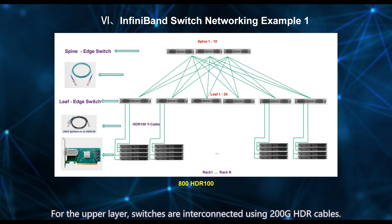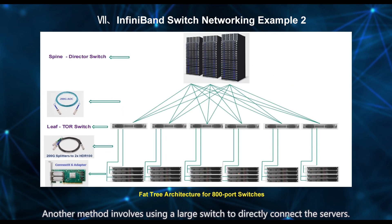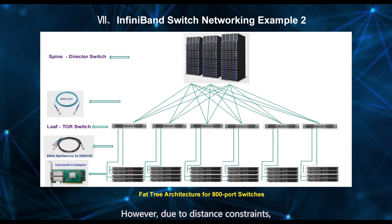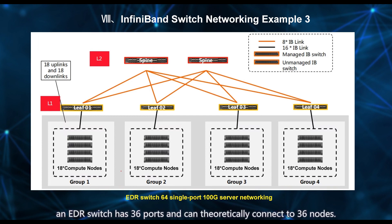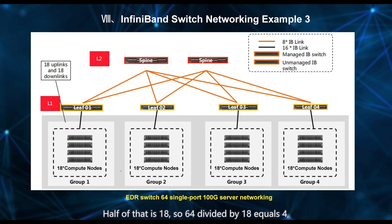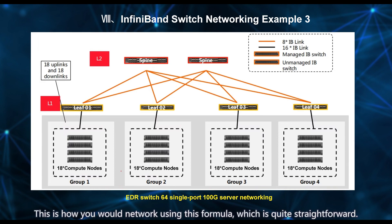For the upper layer, switches are interconnected using 200G HDR cables. Another method involves using a large switch to directly connect the servers; however, due to distance constraints, you might use TOR switches to connect smaller switches to the large switch and then to the servers. There's also the older EDR switch option. If you want to network 64 servers with 100G each, an EDR switch has 36 ports and can theoretically connect to 36 nodes; half of that is 18. So 64 divided by 18 equals approximately 4, and multiplied by 1.5 means you need 6 switches.